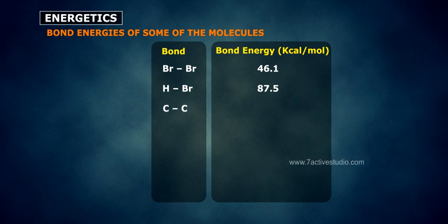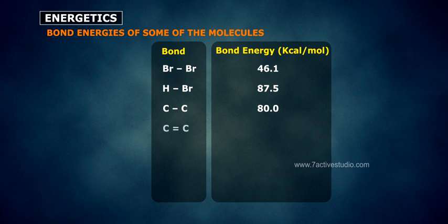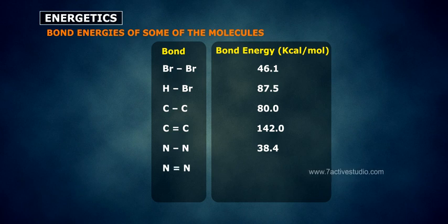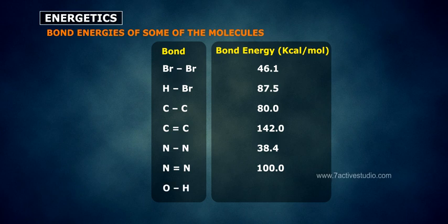Continuing the bond energy table (kcal/mol): C–C (single bond): 80.0; C=C (double bond): 142.0; N–N (single bond): 38.4; N=N (double bond): 100.0; O–H: 111.0. Thank you.